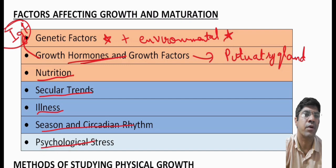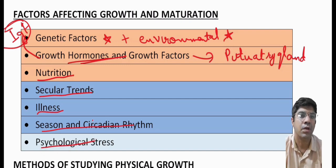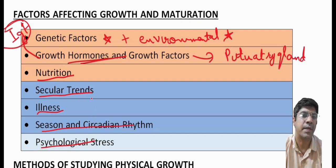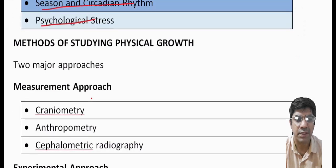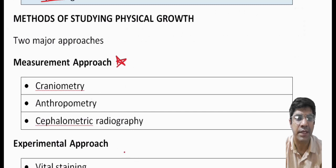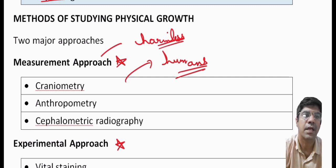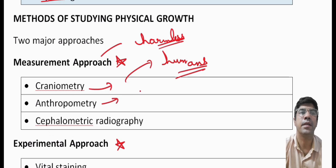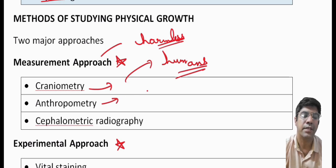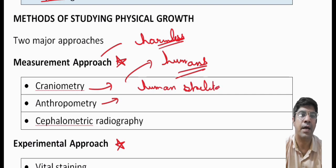Now let us discuss the methods used for studying physical growth. Two approaches can be used: the measuremental approach and the experimental approach. The measuremental approach involves measuring living animals including humans. The experimental approach uses experiments to manipulate growth. Methods in the measuremental approach include craniometry, anthropometry, and cephalometry. For the experimental approach, methods include vital staining, radioisotopes, autoradiography, and implant radiography.